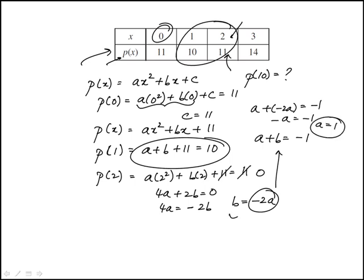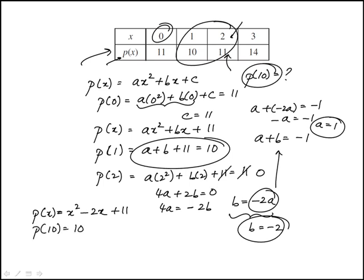So we have a is 1, b is minus 2, and c is 11. So our function is x squared minus 2x plus 11. Now we can compute p of 10, where we replace x with 10. It would be 10 squared minus 2 times 10 plus 11, which is 100 minus 20 plus 11. This is 80 plus 11. The answer is 91.